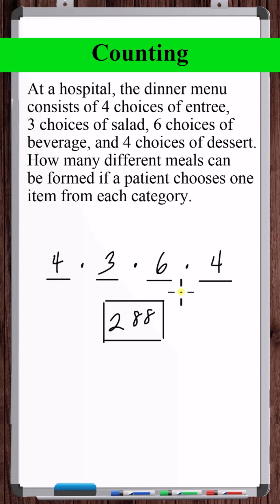That's why this is not a permutation or combination problem, and that's also why there's no rearrangements here. If the entree is meatloaf, the salad is Caesar, the beverage is tea, and the dessert is pie, we are not counting if the Caesar salad comes first, then the meatloaf, then the tea, then the pie. No. We're not counting rearrangements here.